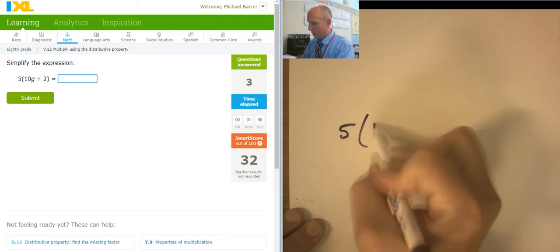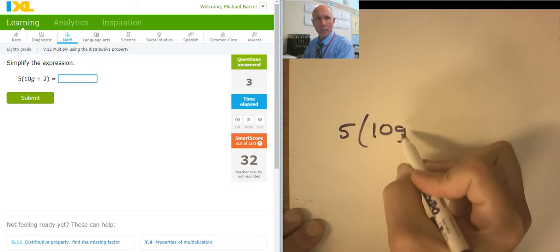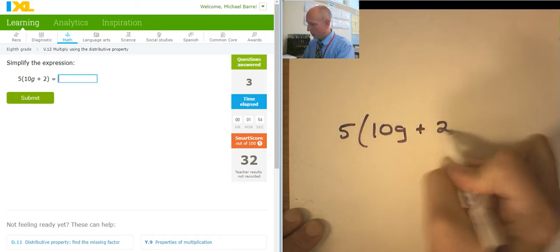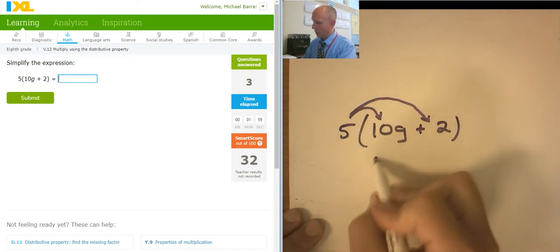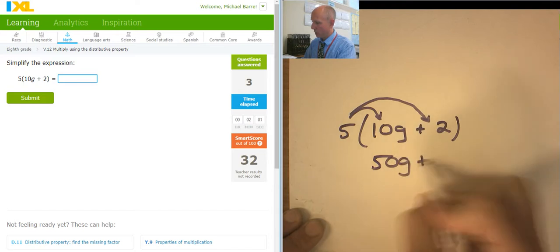5(10G+2). The 5 is distributing. So this is 50G plus 10.